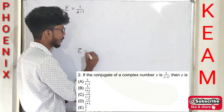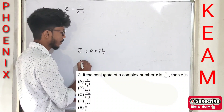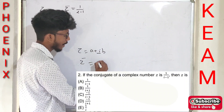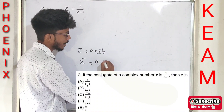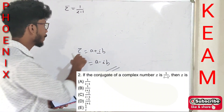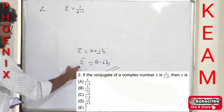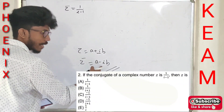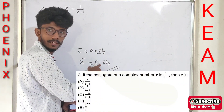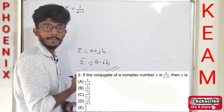Let z = a + ib. Then the conjugate z-bar = a − ib. We are given that z-bar equals 1/(i − 1).